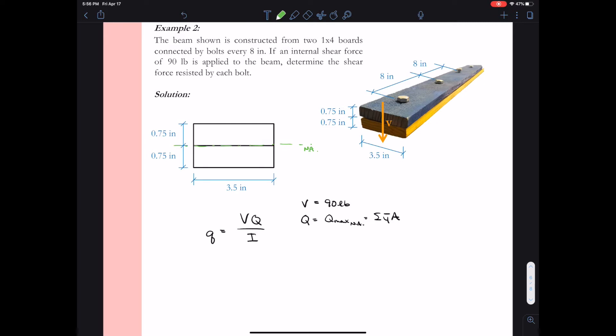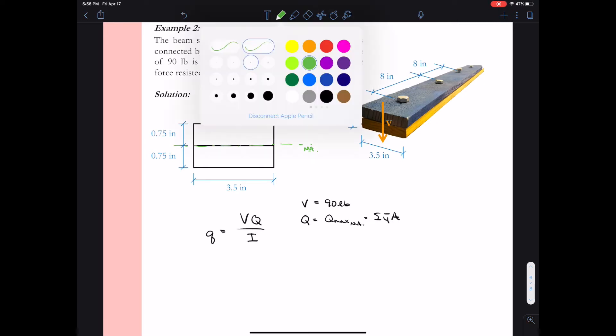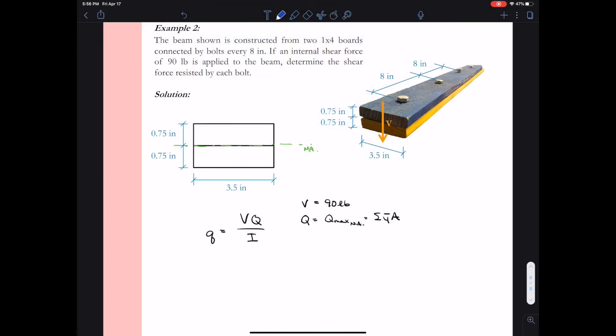And that's going to happen to coincide with the neutral axis. So if we sketch our neutral axis in there, we'll see that Q in this particular problem is going to be the maximum value for Q that we can obtain at the neutral axis. So Q being the first moment of the area is the summation of y bar times a. So let's identify the area that we're using. We're using everything above that plane of the connection.